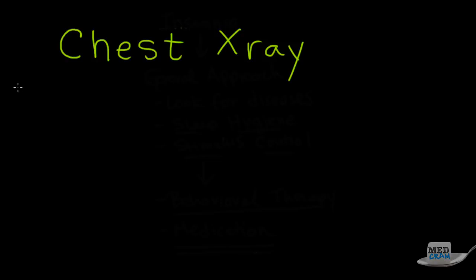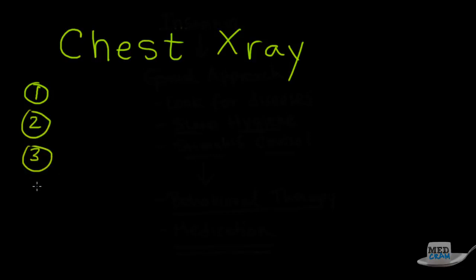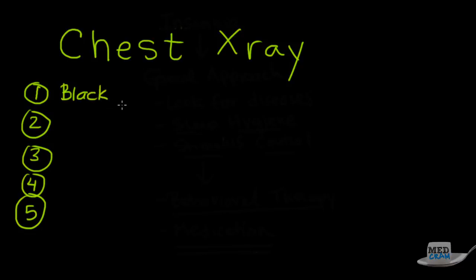An x-ray is simply a film that is looking at material hitting the film and causing it to either be dark or white. It's a black and white film, and that correlates to about five different areas of density. Things that are air density on the chest x-ray are going to appear black.